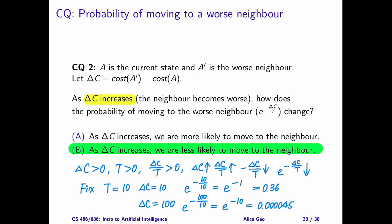We can also solve this by trying some numbers. Let's fix the temperature to be 10. Then if we change delta C from 10 to 100, the probability decreases from 0.36 to 0.000045.